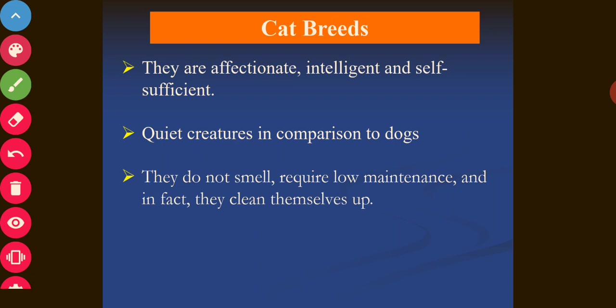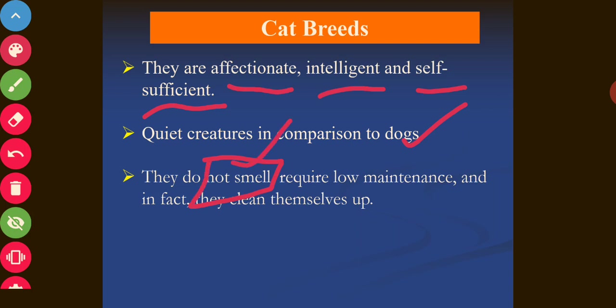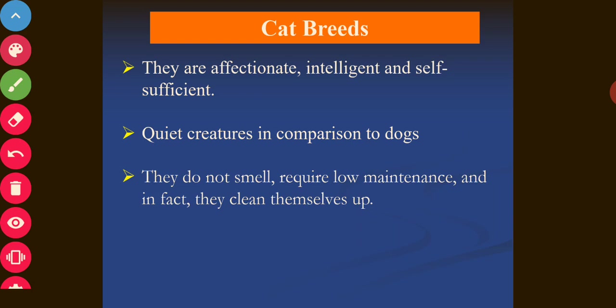Now moving to cat breeds. Cats are affectionate, intelligent, and self-sufficient. They are quiet in nature compared to dogs, do not release any kind of smell, require low maintenance, and clean themselves - which is a very important property.